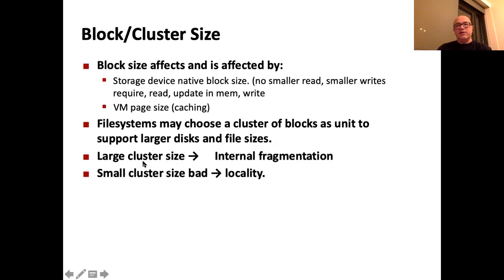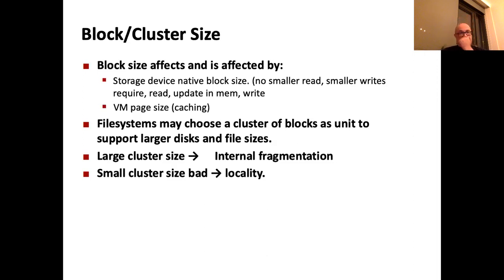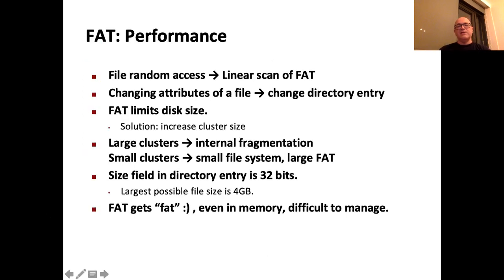You must choose an appropriate cluster size so that the FAT fits into cache for fast access. If you choose a large cluster size—like one megabyte—a 100-byte file will use one megabyte, causing internal fragmentation. If you choose a small cluster size, it hurts locality—your file will not be stored in consecutive sectors—and you will also have a very large FAT. So if you have small clusters on a large hard disk, the FAT becomes huge.